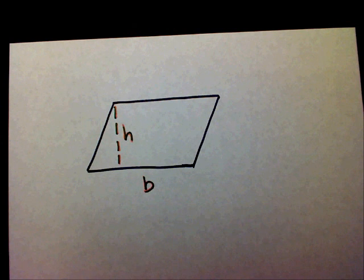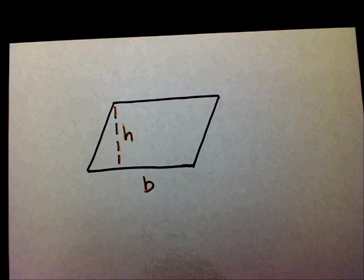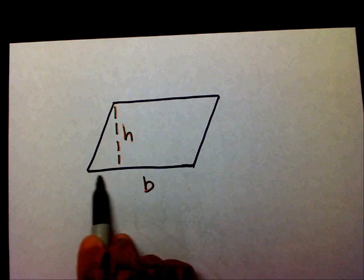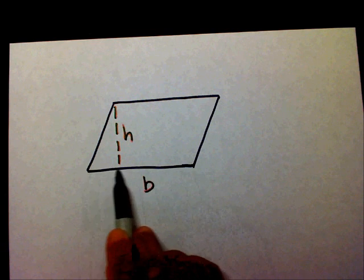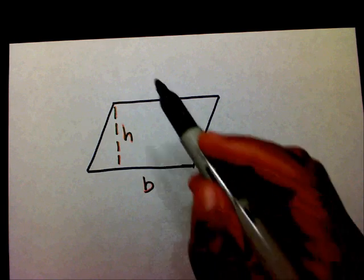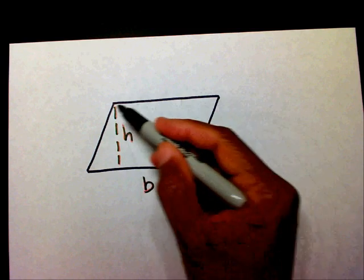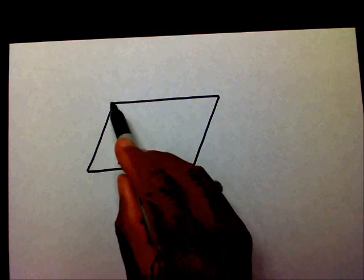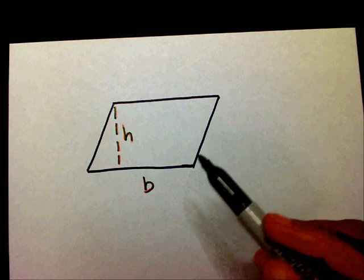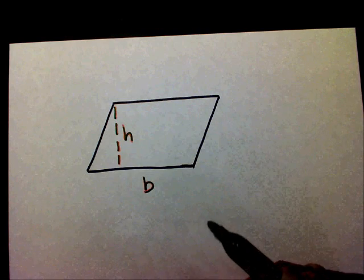In order to find the area of a parallelogram, you need two things. You need to know the base and the height. The base is the bottom of your parallelogram — it's going to be one of your parallel lines. And then you have another one on top. So you can either use this as your base or this as your base. Either way, if you use this as your base, you want to find the height of your parallelogram.